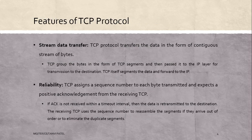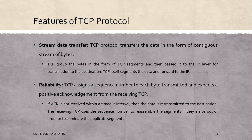Now the features of TCP protocol. First is stream data transfer. TCP transfers data in the form of a contiguous stream of bytes. TCP groups the bytes in the form of TCP segments and then passes them to the IP layer for transmission to the destination. TCP itself segments the data and forwards it to the IP layer.